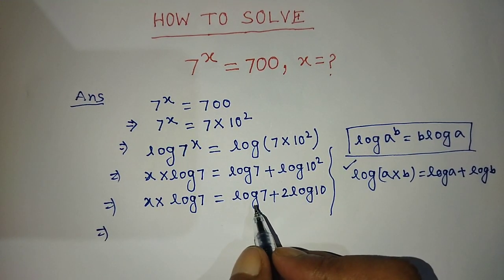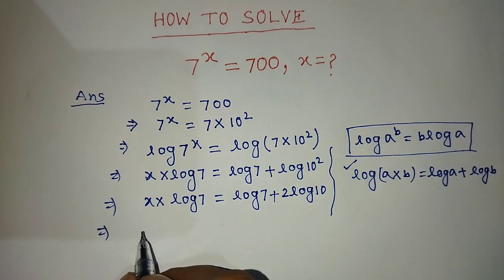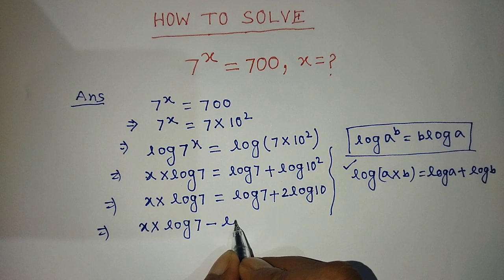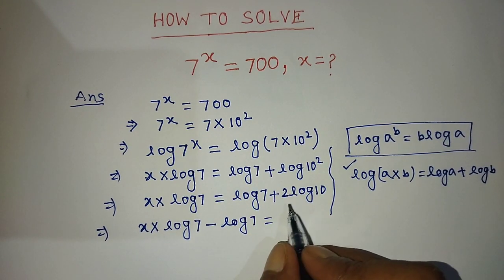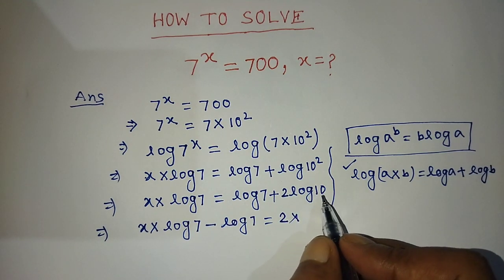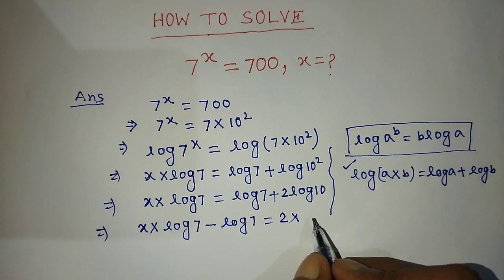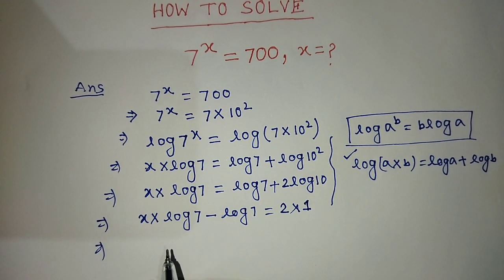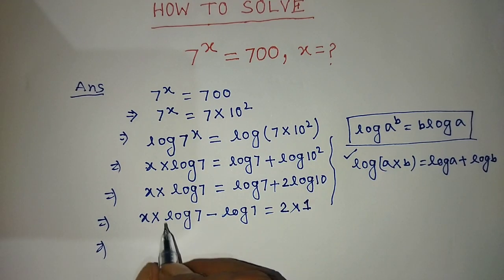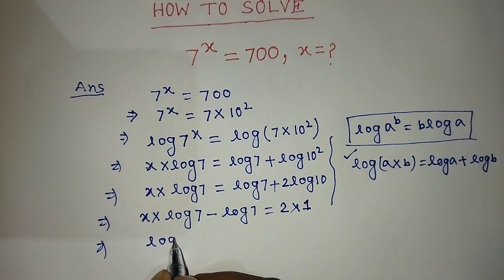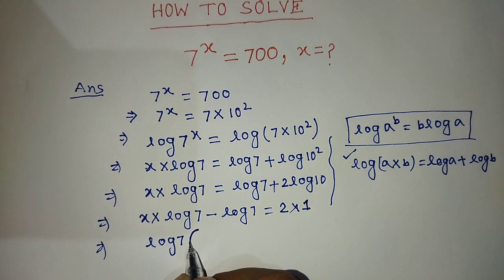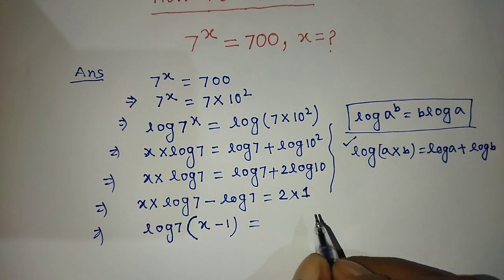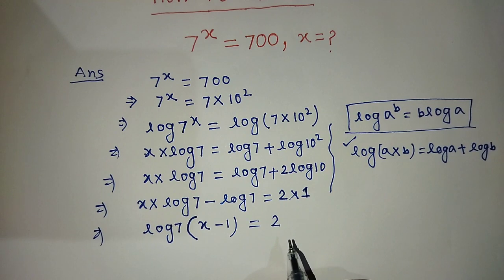We transpose log of 7 from the right side to the left side, so on the left hand side we write x into log 7 minus log 7, equal to 2 into log of 10. The value of log of 10 is 1, so on the right hand side we write 2 into 1 equals 2. On the left hand side, we take log of 7 common, giving log of 7 times (x minus 1) equals 2.